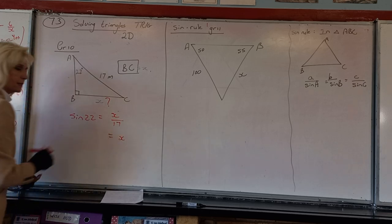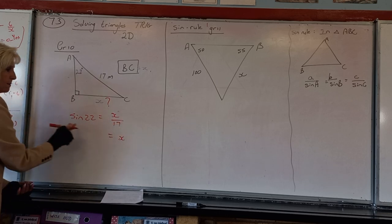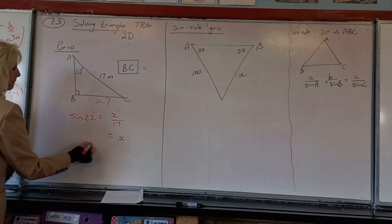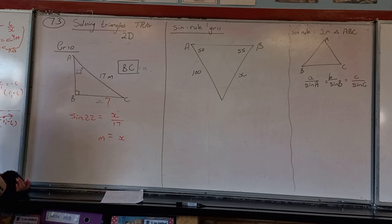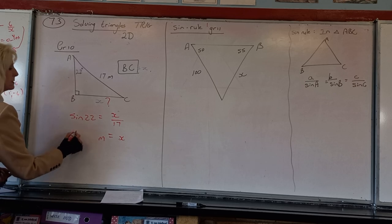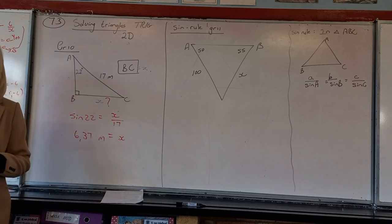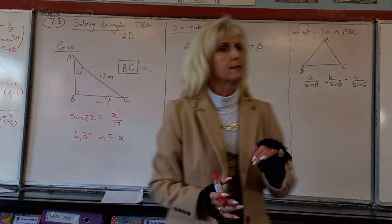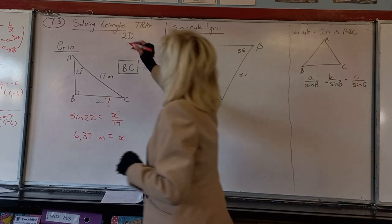To solve for x, multiply both sides by 17. So x = 17 × sin 22°, which gives you a certain number of meters. We always round to two decimal places unless otherwise indicated. So when I ask you to find sides and angles, you are solving triangles.